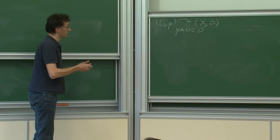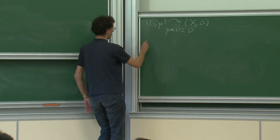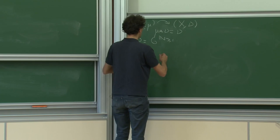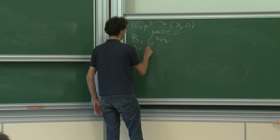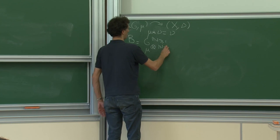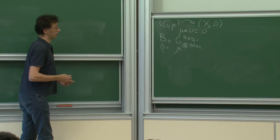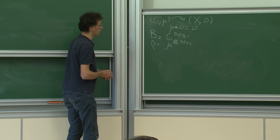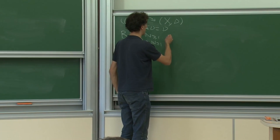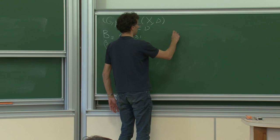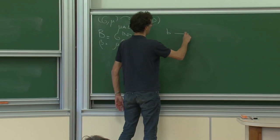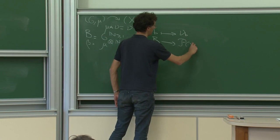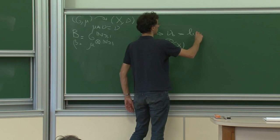J'ai introduit une nouvelle notion, notée nu_B, qui est définie sur l'espace produit B muni de la mesure bêta — la mesure produit. C'est l'espace des tirages aléatoires d'éléments indépendants identiquement distribués dans G de loi mu. J'ai introduit une application qui va de B dans l'espace des mesures de probabilité sur X, et cette mesure est la limite — le théorème dit qu'elle existe.